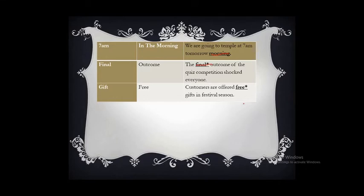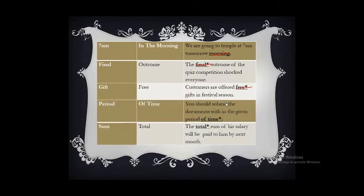'Free gift' — gift itself is what is given without payment, so using 'free' again makes it superfluous. The correct form is: 'Customers are offered gifts in the festival season.' 'Period of time' — period means a portion or interval of time, so using 'time' again is superfluous. The correct form is: 'You should submit documents within the given period.' 'Sum total' — sum itself means a total amount, so 'total' should be removed.